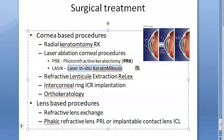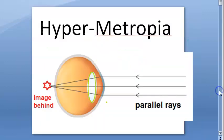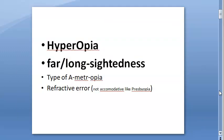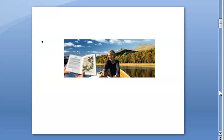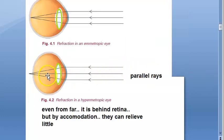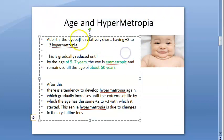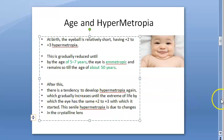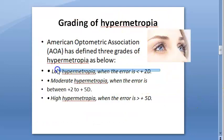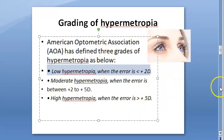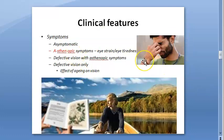Hypermetropia: the image forms behind the retina. It is also called farsightedness or long-sightedness, though that is not the correct term. Parallel rays from a distant object form behind the retina when accommodation is at rest. Babies are hypermetropic at birth (plus 2 to plus 3), becoming emmetropic around 5 to 7 years. Grading: less than plus 2 diopters is low hypermetropia.